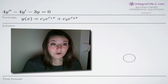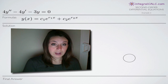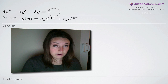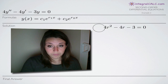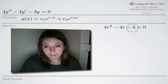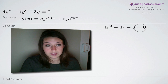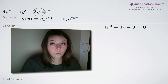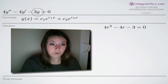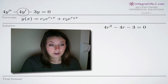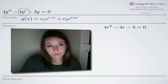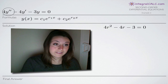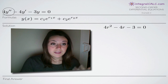The way we go about doing that is by converting our original function to the characteristic equation: 4r squared minus 4r minus 3 equals zero. Basically, we plug in 1 for y, r for y prime, and r squared for y double prime.